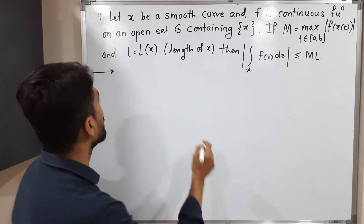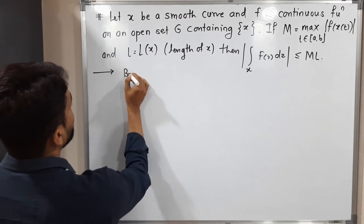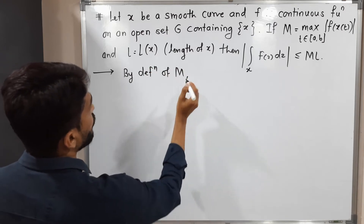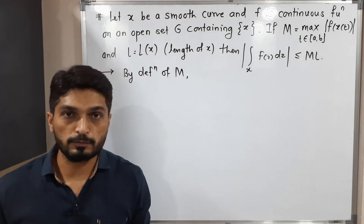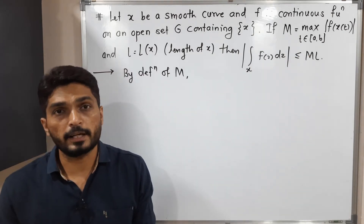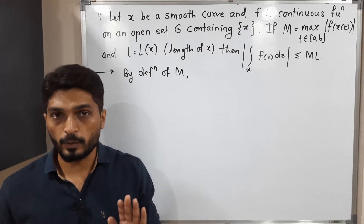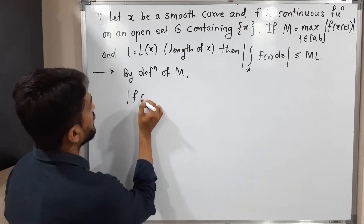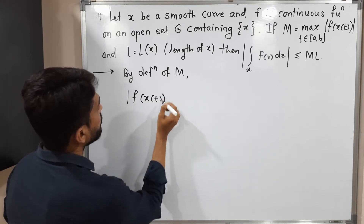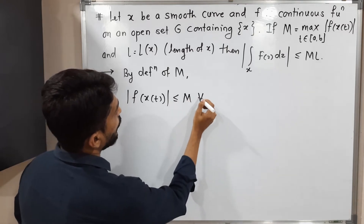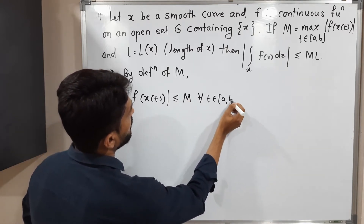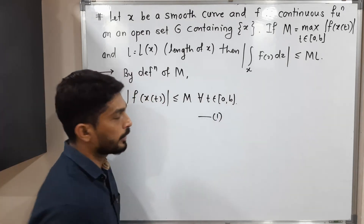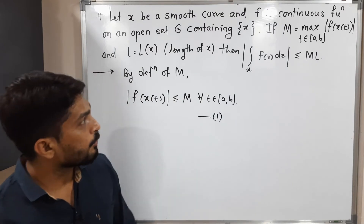By the definition of m, m is the maximum value of mod f of z, so all values of mod f of z are less than or equal to m. We can write: mod f of z, or f of x of t, is less than or equal to m for all t belonging to the closed interval [a, b]. This is a very important inequality, so I'm calling it inequality number one.